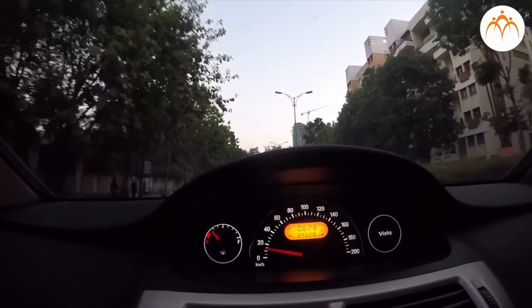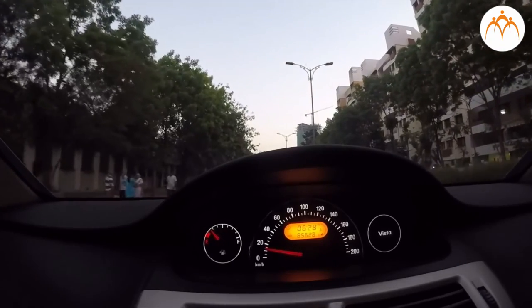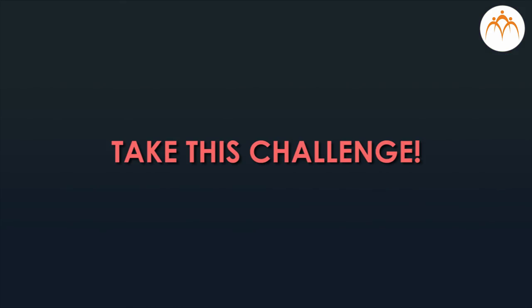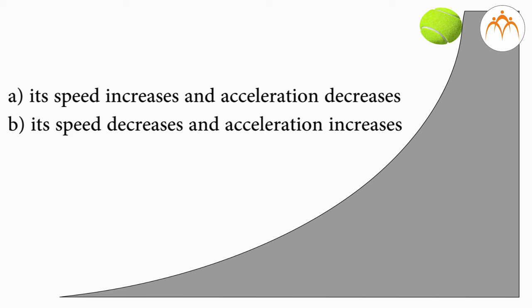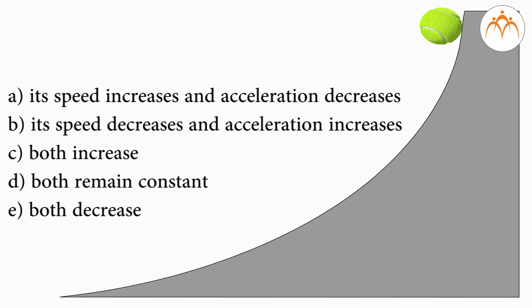Sliding along the slide in a park, car starting from rest and increasing speed, car coming to a stop are some examples of acceleration. We discussed velocity and acceleration of an object. We will explore how to capture this data in graphical form in the next section. Take this challenge: as the ball rolls down this hill, which of these statements is true? Its speed increases and acceleration decreases; its speed decreases and acceleration increases; or both increase and both remain constant; or both decrease?